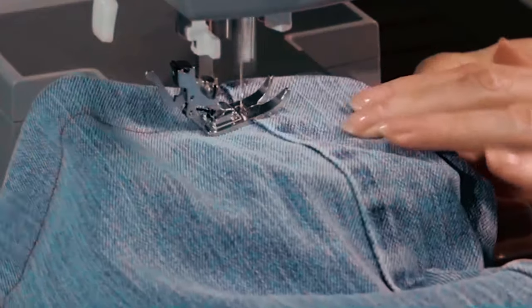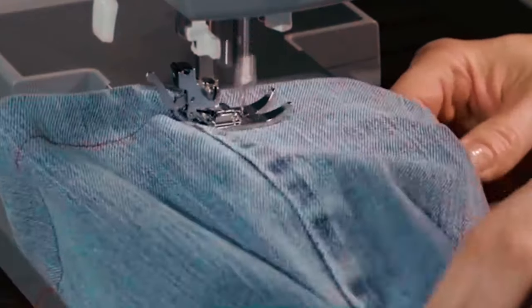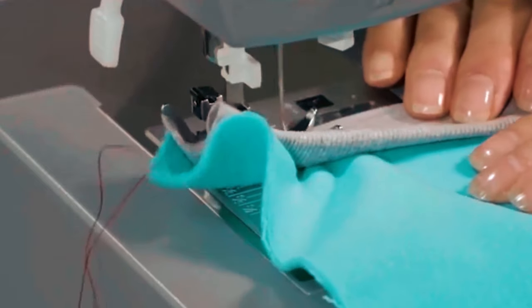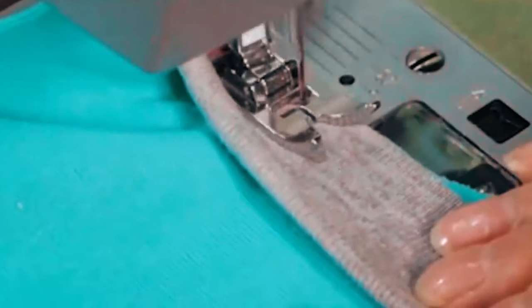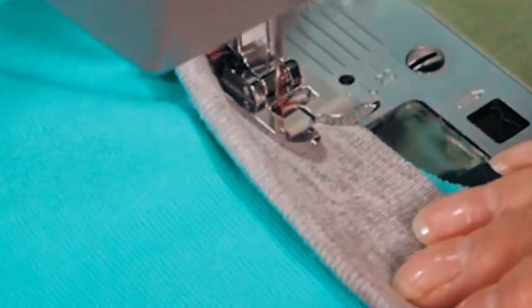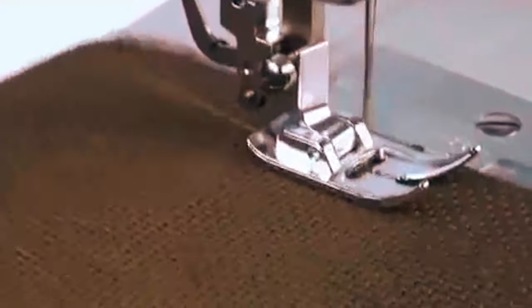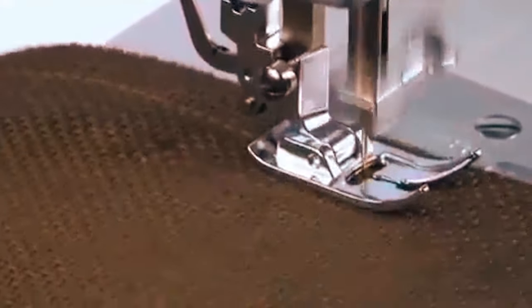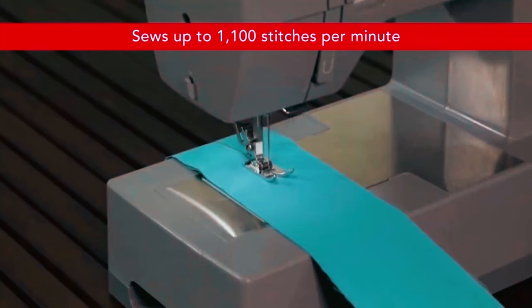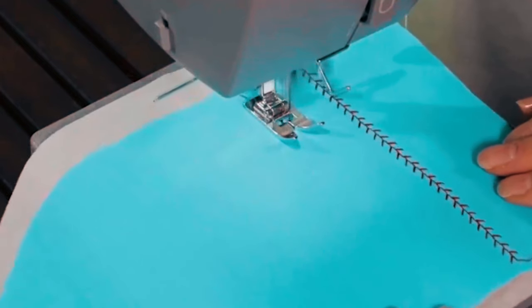The Singer 4432 has 32 built-in stitches including basic, decorative, and stretch stitches with a one-step buttonhole function that lets you sew consistent buttonholes in a simple one-step process. One of the best features of the sewing machine is its high sewing speed of up to 1,100 stitches per minute, which allows you to finish projects faster.